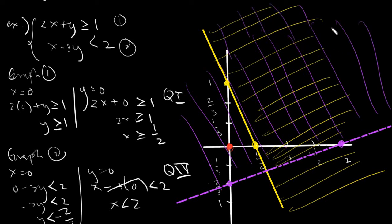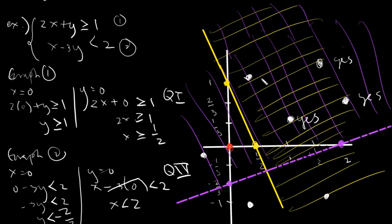Every given point that would lie on the shaded part would be part of the solution. Every given point on the shaded region would be part of the solution. In this case, a point only in the violet shaded region is not part of the solution. A point only in the yellow shaded region is not part of the solution. A point outside both is also not part of the solution. But a point that falls in both the violet and yellow shaded regions — yes, that is part of the solution.